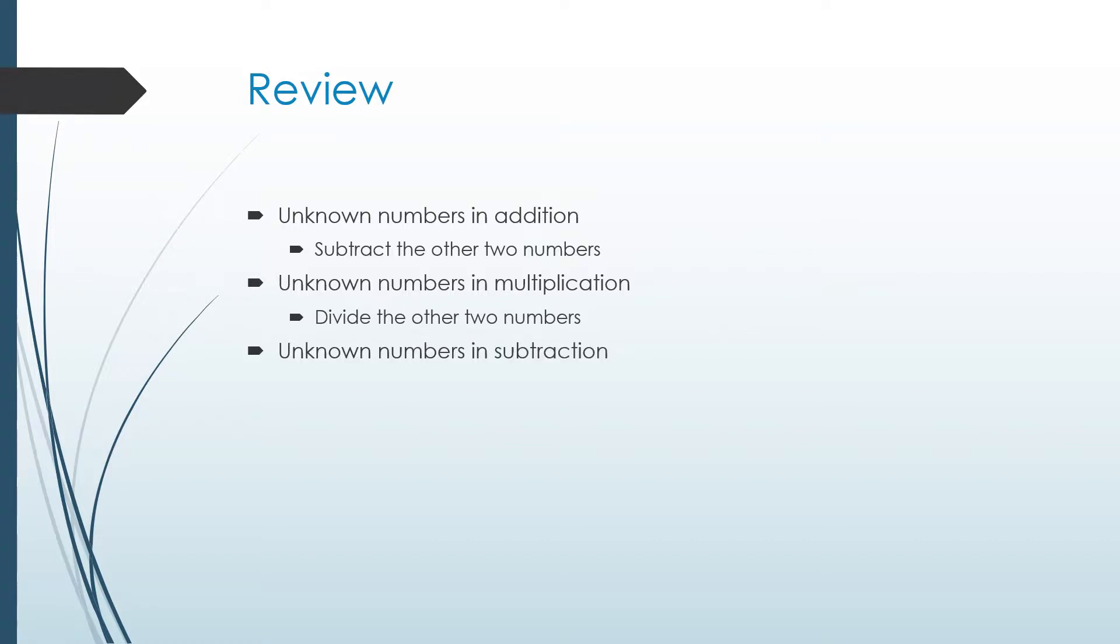Unknown numbers in subtraction, it depends on what number you're missing. If you're missing the first number, which is the minuend, you're going to add the other two numbers. If you're missing that second middle number, which is the subtrahend, you're going to subtract the other two numbers.